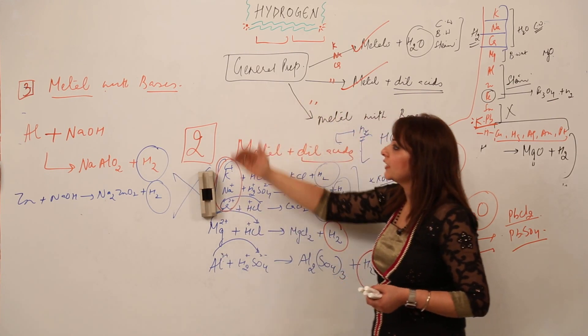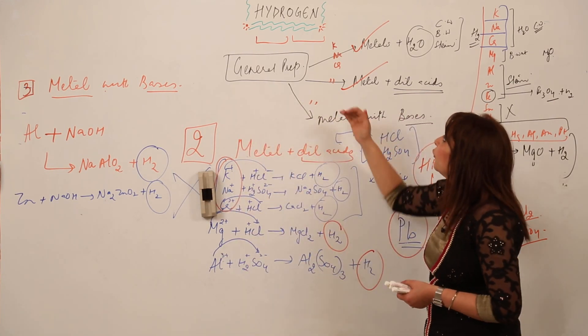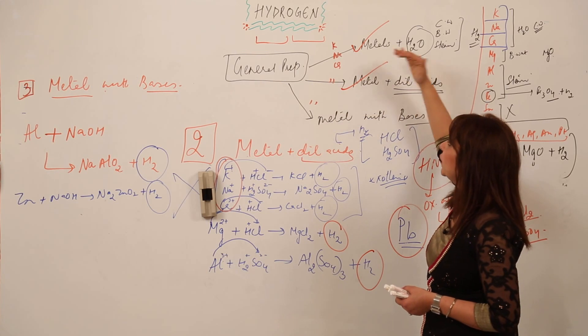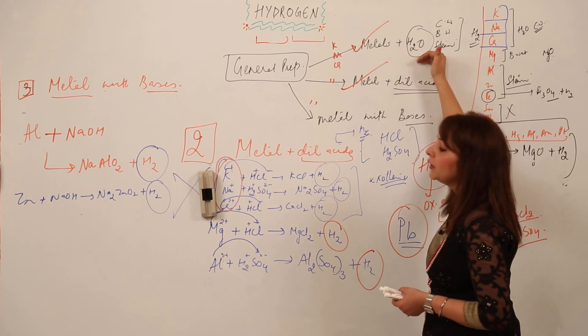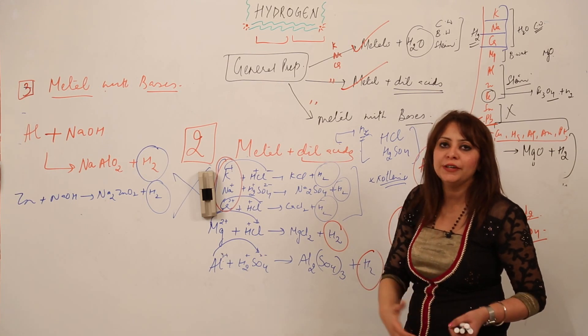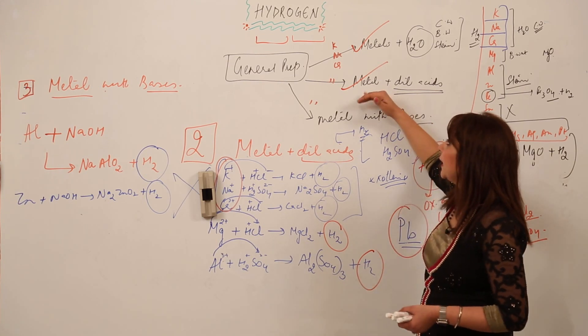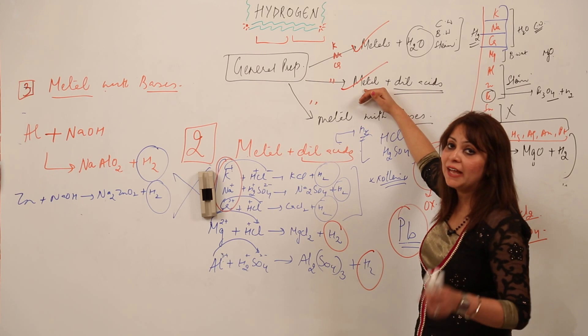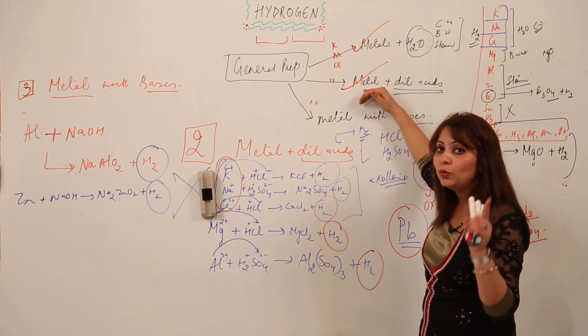This is how we have discussed the three general methods for preparing hydrogen: the reaction of metals with water—some metals react with boiling water, some with cold water, and some with steam. Second is metal with dilute acids. The acid strictly is to be dilute acids.